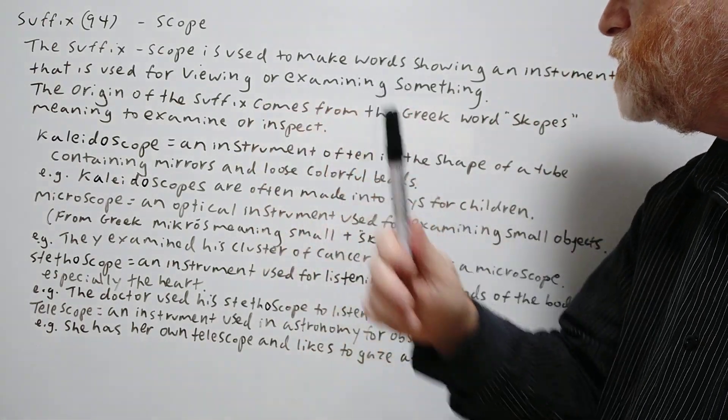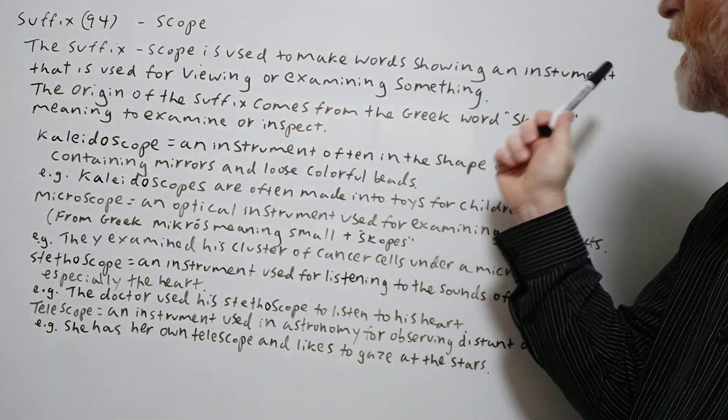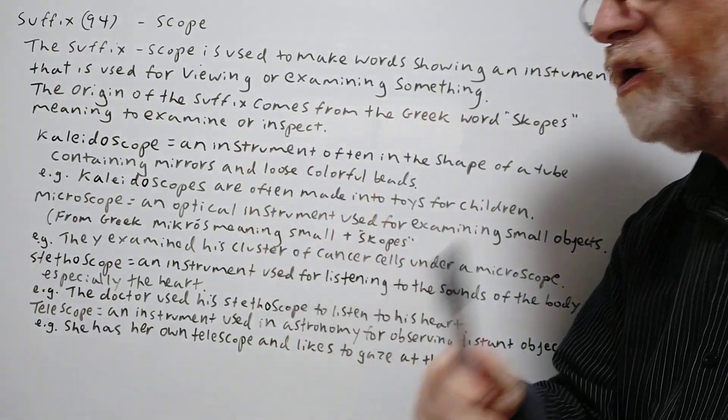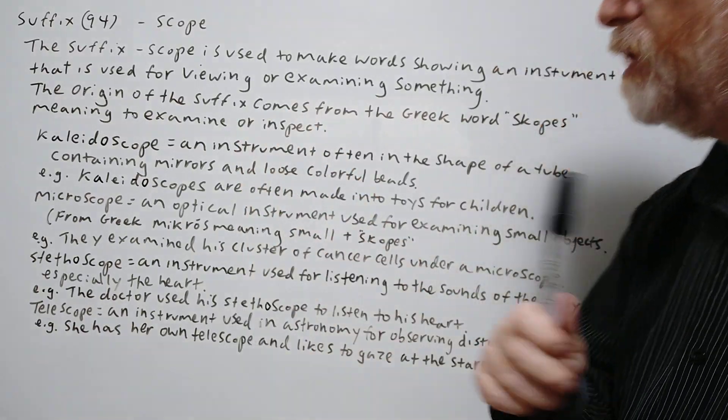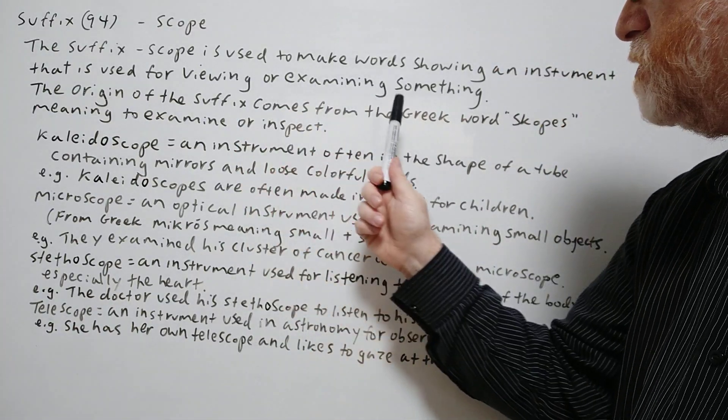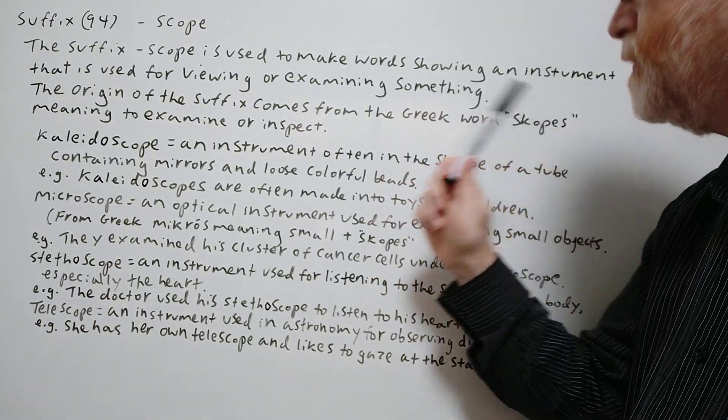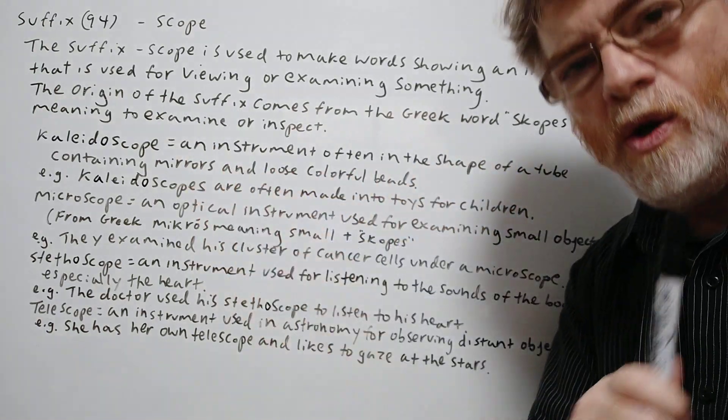The suffix scope is used to make words showing an instrument that is used for viewing or examining something. The origin of the suffix comes from the Greek word scopes meaning to examine or inspect.